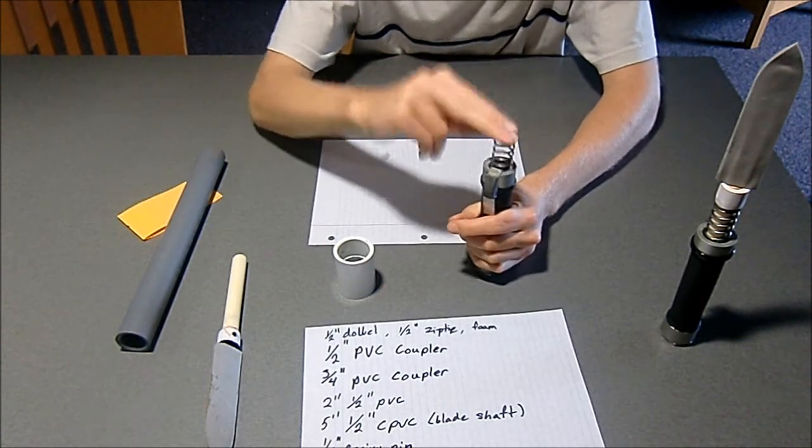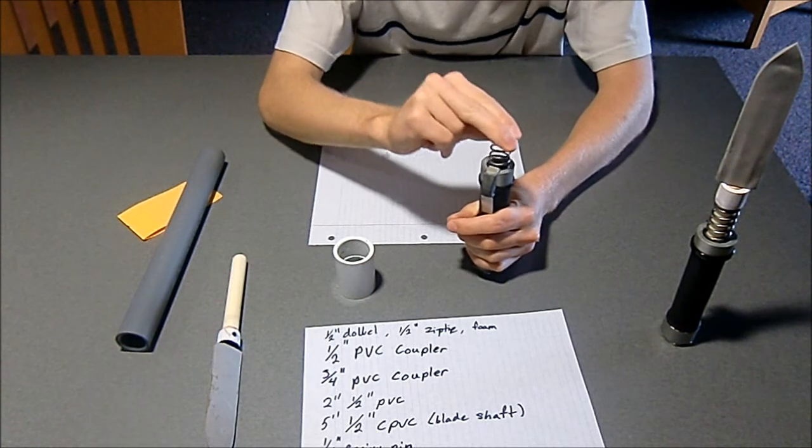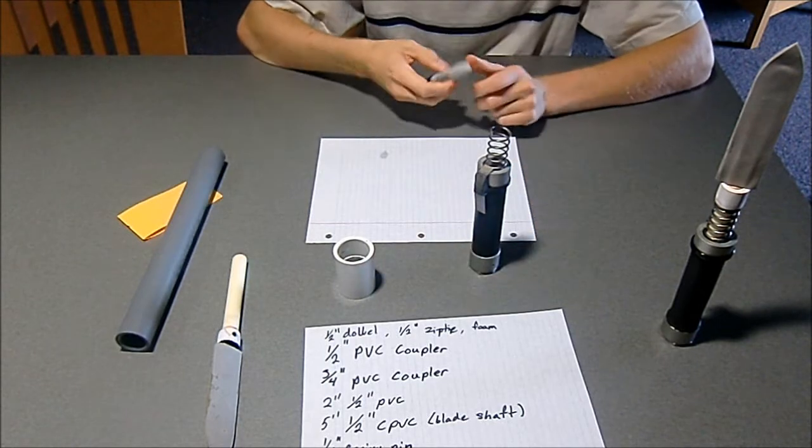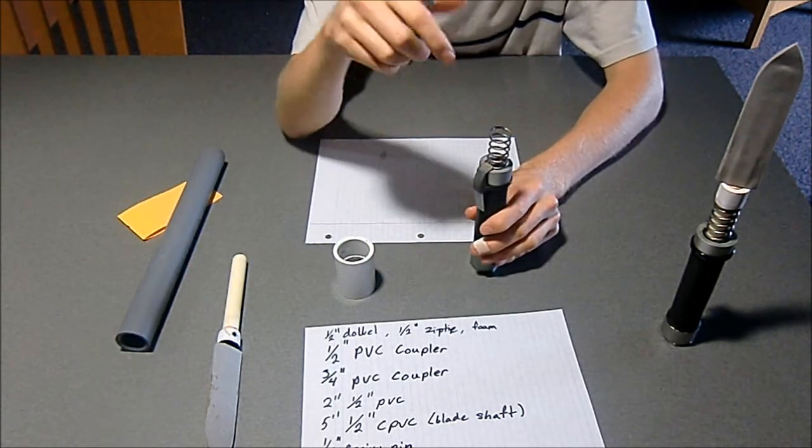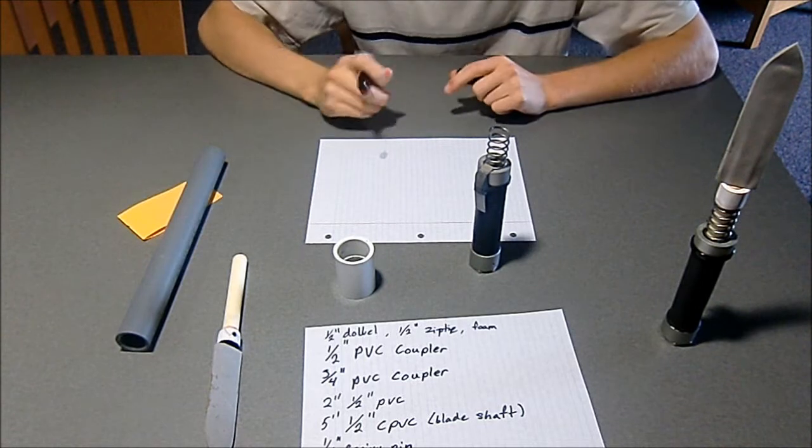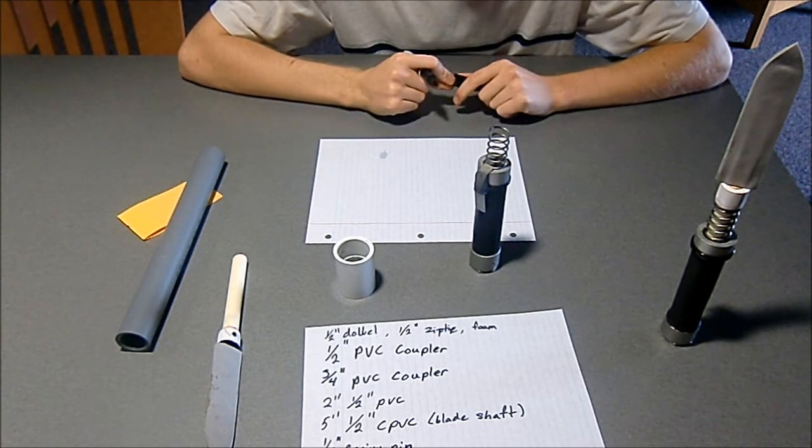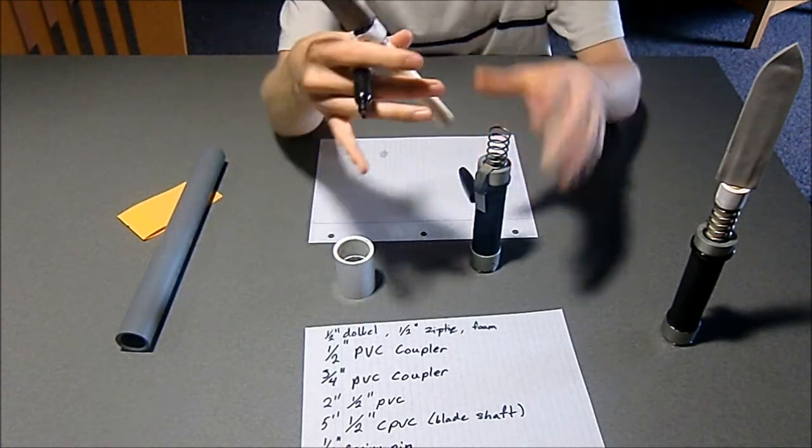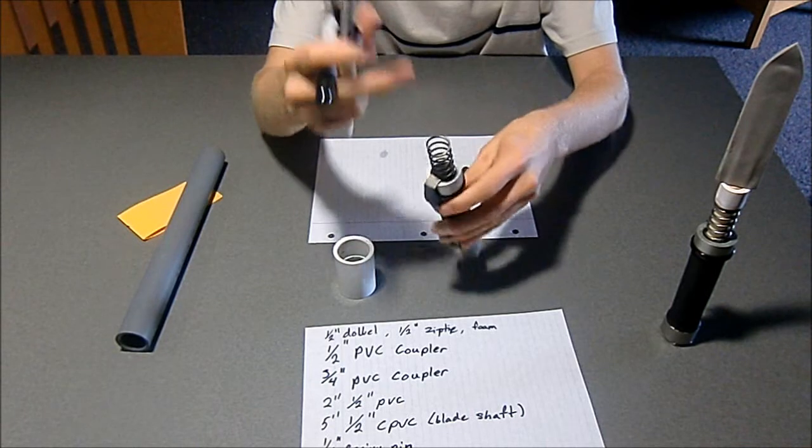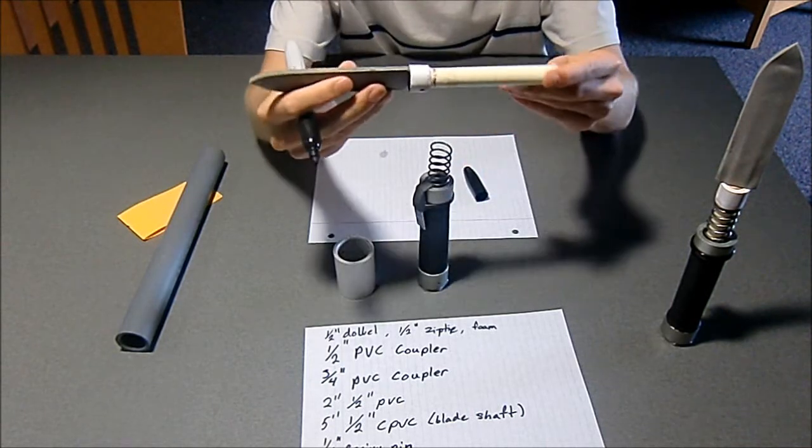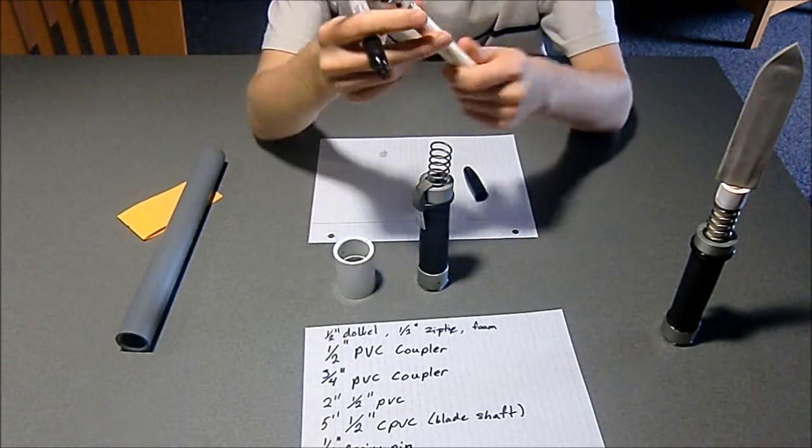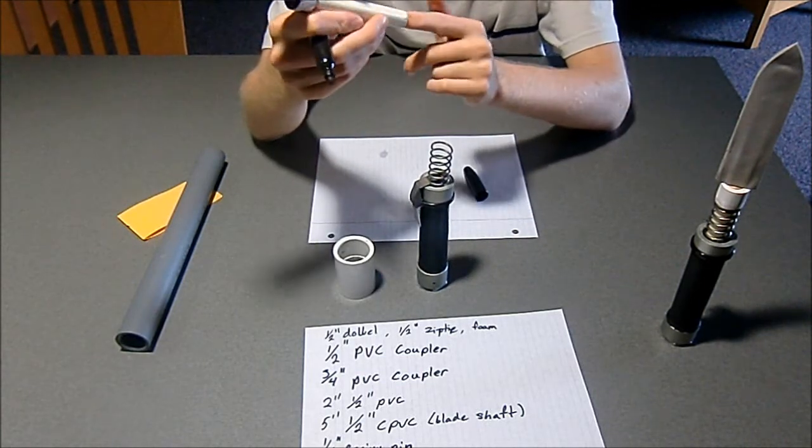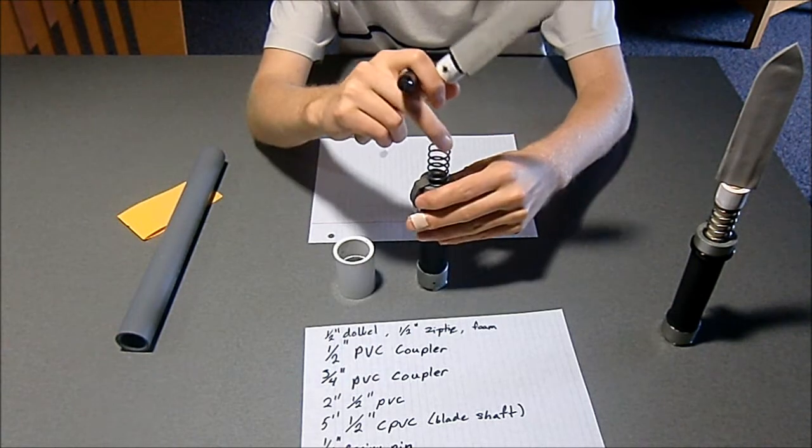Now comes the spring stock or what the spring sits on. Look, this is a pretty beefy spring. The interior diameter of this is bigger than a half inch PVC coupler. And the other purpose of the stop in here is it's a guide for the back shaft of the blade.